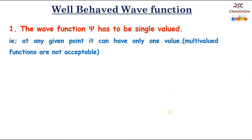In order for a wave function to be acceptable, it should meet certain conditions. Such a wave function is called a well-behaved wave function. So let's see what are the conditions that a wave function must meet in order to be acceptable.